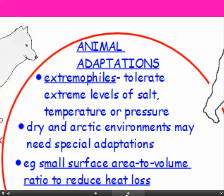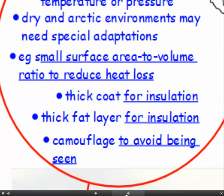Dry and Arctic environments may need special adaptations. To survive in the Arctic, animals need a small surface area to volume ratio to reduce heat loss. They may need a thick coat for insulation, and a thick fat layer, again for insulation to reduce heat loss. They may also need camouflage to avoid being seen. Watch out in questions — it will often ask you to describe the adaptation and explain how it helps the animal survive. So how does a small surface area to volume ratio help? It reduces heat loss.